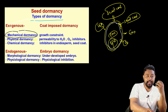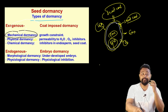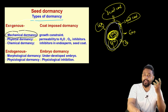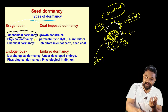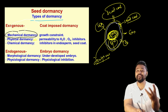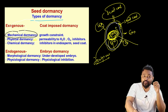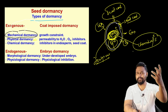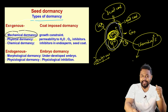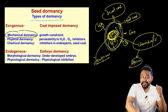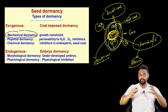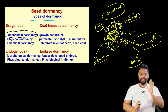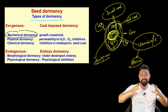Endogenous dormancy is embryo-related - endo meaning internal. The embryo itself, including the cotyledons, is involved. Endogenous dormancy is caused by chemicals and hormones. For example, abscisic acid (ABA) is a plant growth hormone that maintains seed dormancy, preventing the seed from germinating.